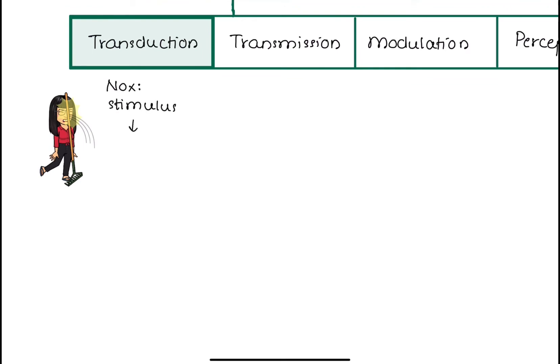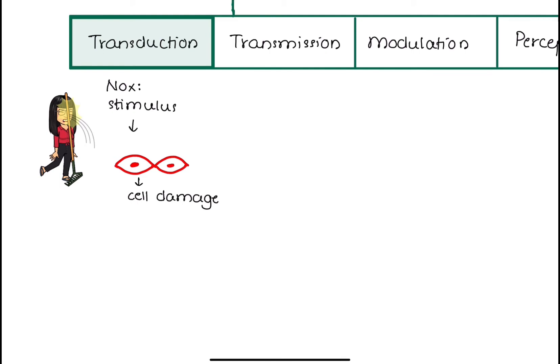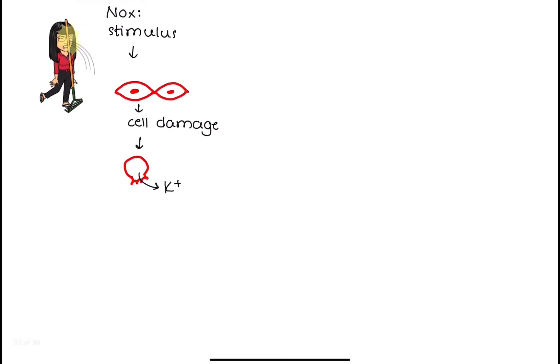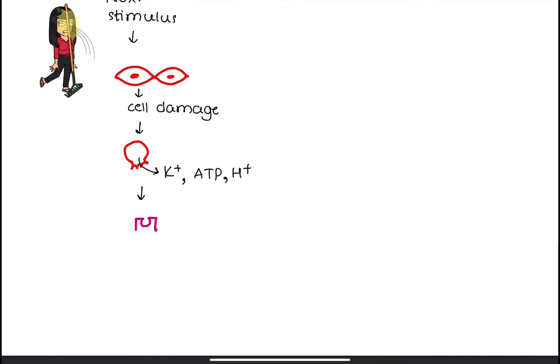When there is damage to our tissues, substances inside the cells are released into the surroundings such as potassium, ATP, and H+. These substances are inflammatory mediators which directly stimulate the pain receptors, also known as nociceptors, and sensitize them to accept more noxious stimulus.